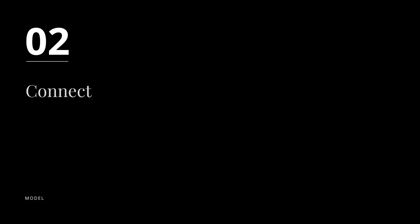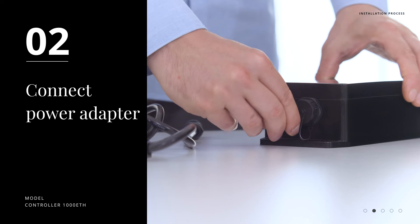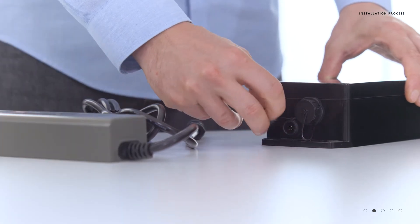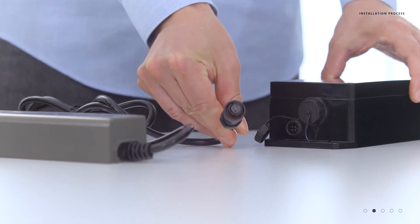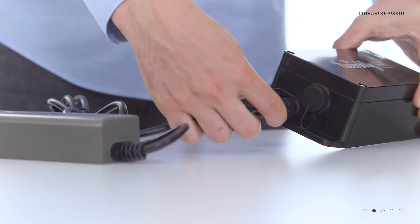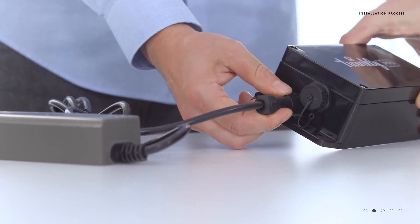Step two, connecting the power adapter. On the side of the controller you will see a smaller cap. Unscrew the small cap to reveal the receptacle for the AC power adapter. Using the key connection, simply insert and screw down the collar to ensure a tight connection.